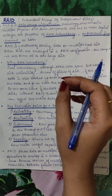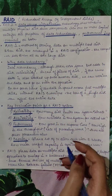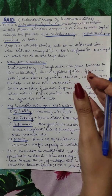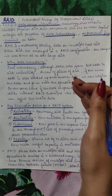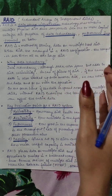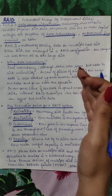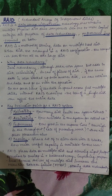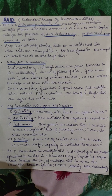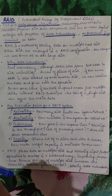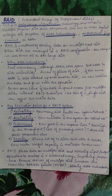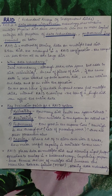RAID allows parallel access on multiple disks because data is stored on multiple disks, improving performance. To evaluate which RAID organization is best, there are evaluation points. First is reliability — how many disk failures the system can tolerate and how many times you are able to back up your data. Second is availability — how much of the system's disk drives are actually available for storage use.